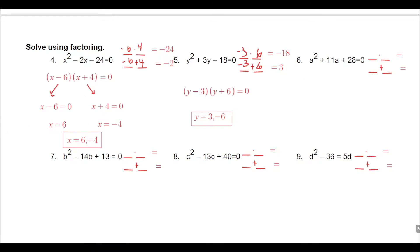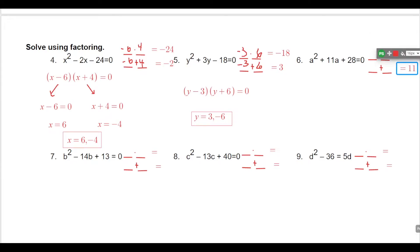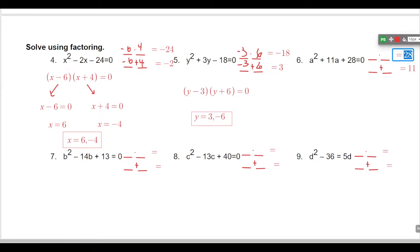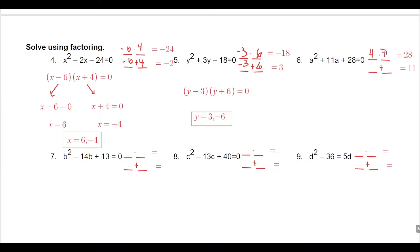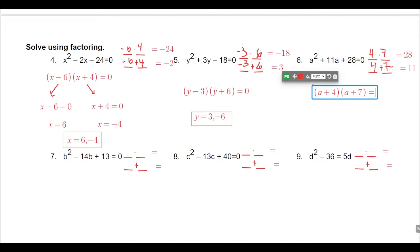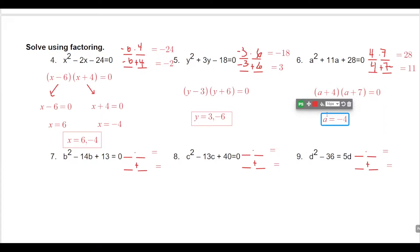For number 6, we're looking for two numbers whose product is 28 and whose sum is 11. Factors of 28: 1 and 28, 2 and 14 — not going to work. 4 and 7: 4 times 7 is 28, 4 plus 7 is 11 — there we go. So our two factors are a plus 4 times a plus 7 equals 0. The two solutions are negative 4 and negative 7.